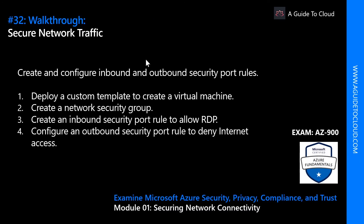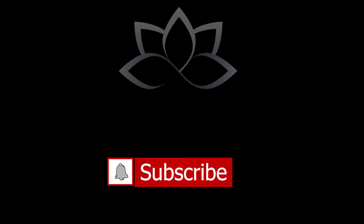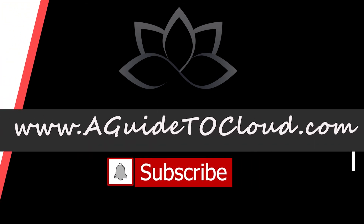In this module we learned about defense in depth and various Microsoft Azure network security solutions. In the next video we're going to do a walkthrough on how to secure network traffic — deploying a custom template to create a virtual machine, creating a Network Security Group (NSG), creating an inbound security port rule to allow RDP, and configuring an outbound security port rule to deny internet access.